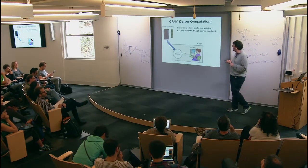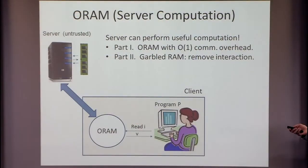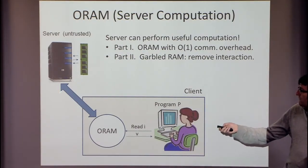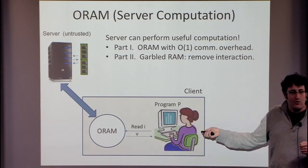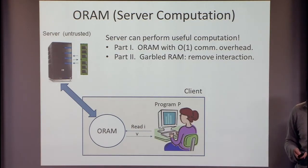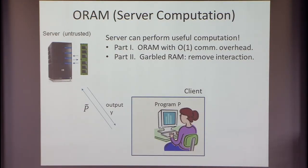In the next part of the talk, I'm going to tell you about round complexity. I want to make this whole process non-interactive. There are two sources of interaction here. First, this protocol could be interactive each time the program wants to read a location. But we're going to be more ambitious: we'll get rid of all interaction and have a completely non-interactive solution. You take the whole program, somehow send it to the server in a hidden, garbled way, and the server will be able to run it. This is completely non-interactive — you just send the whole program to the server and the server doesn't learn anything. This is called garbled RAM.